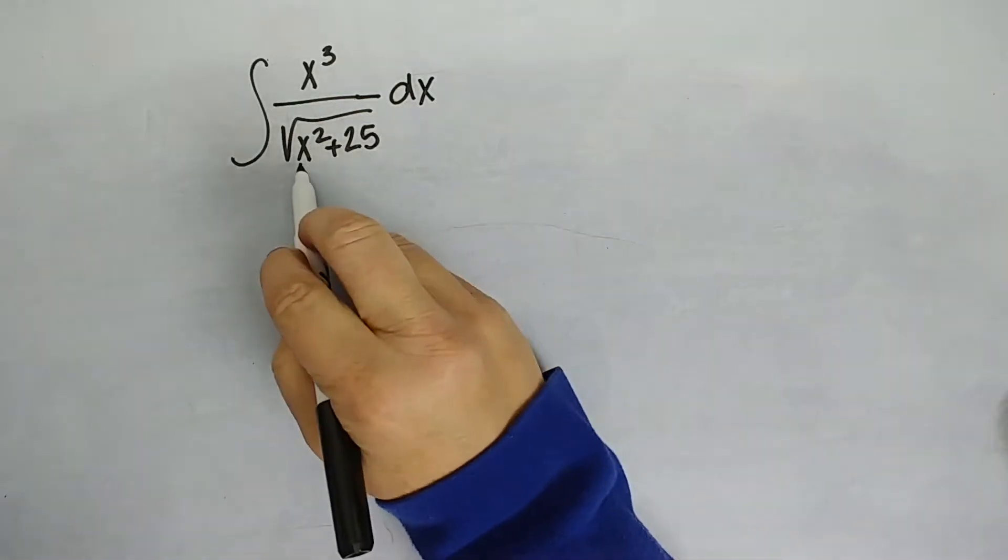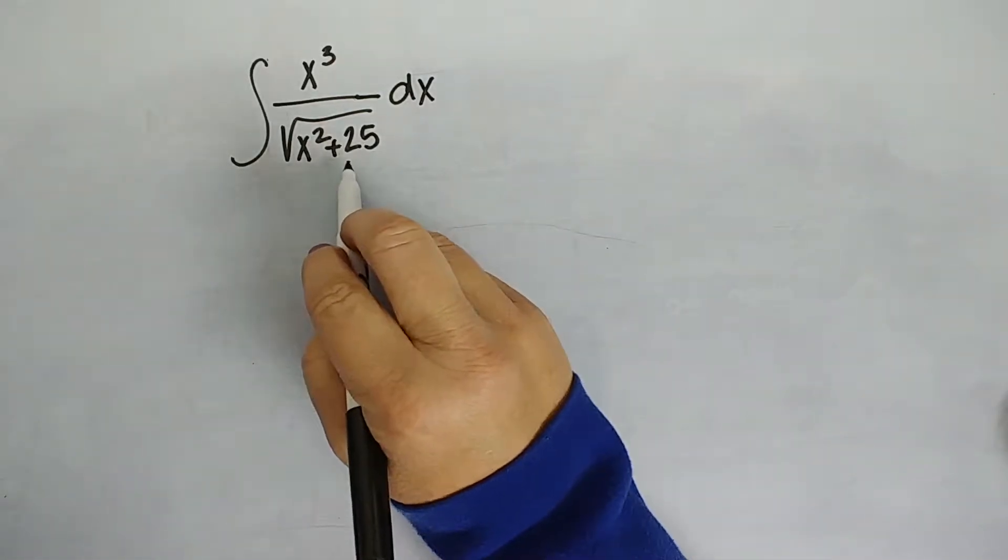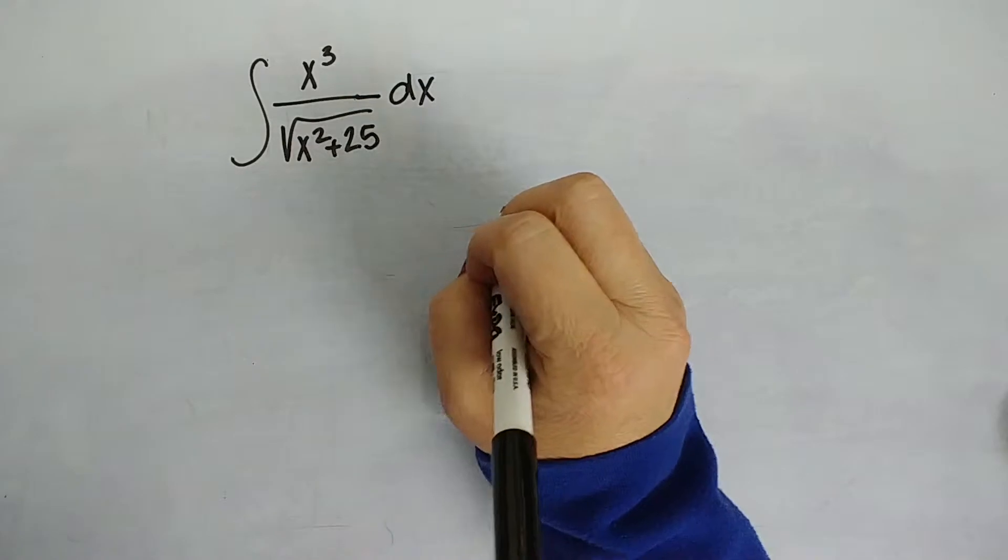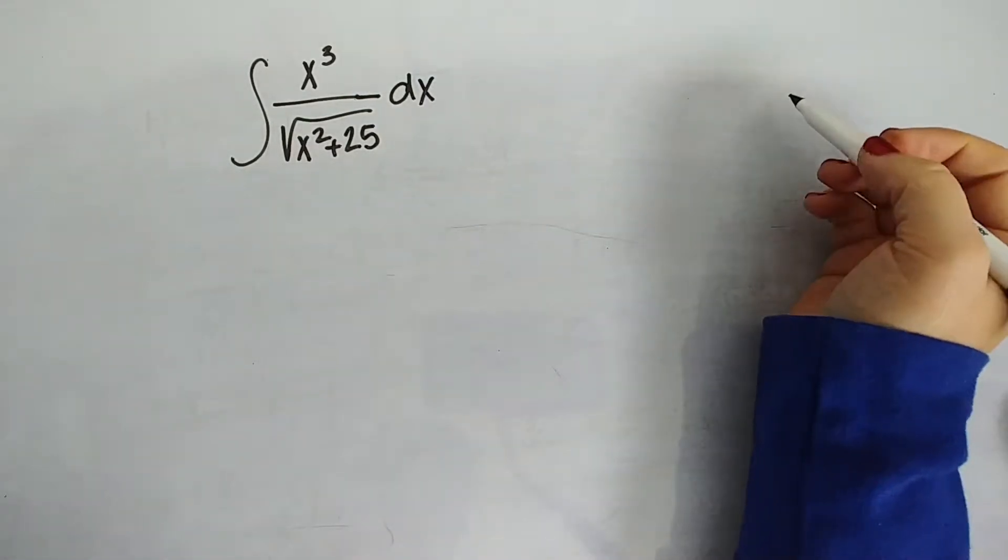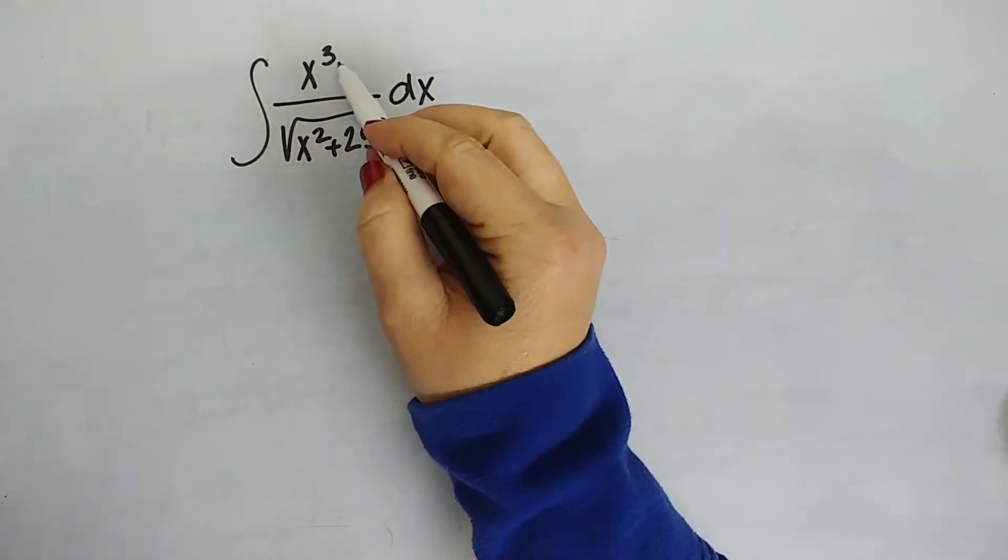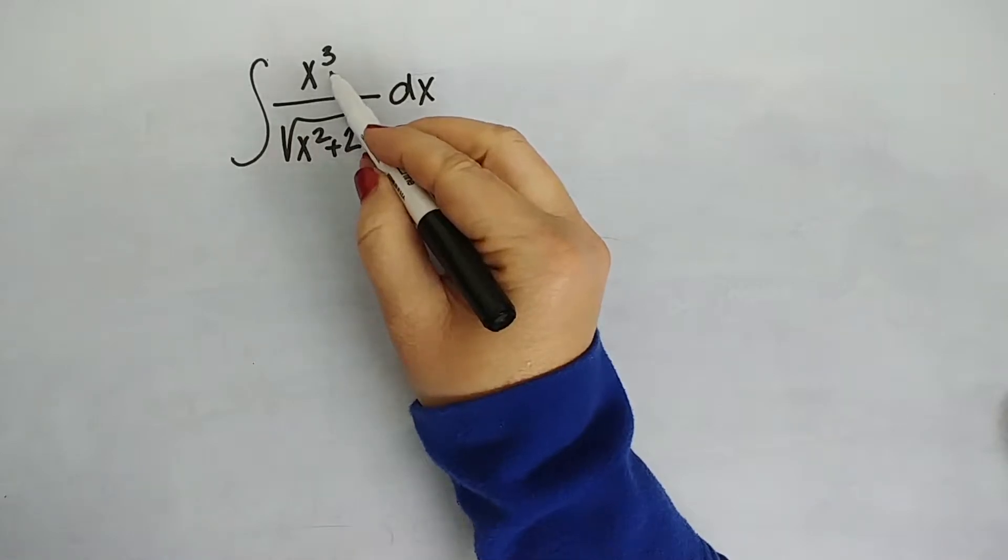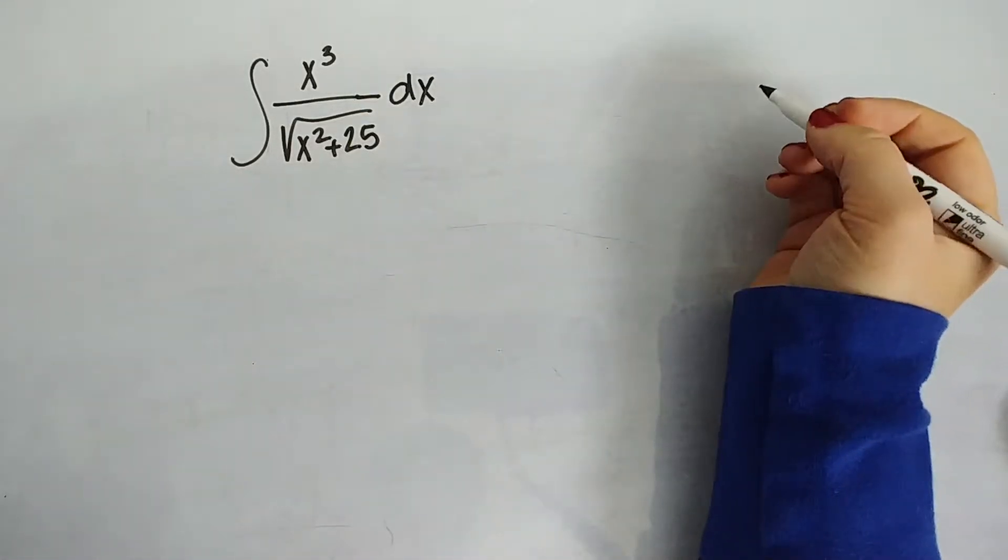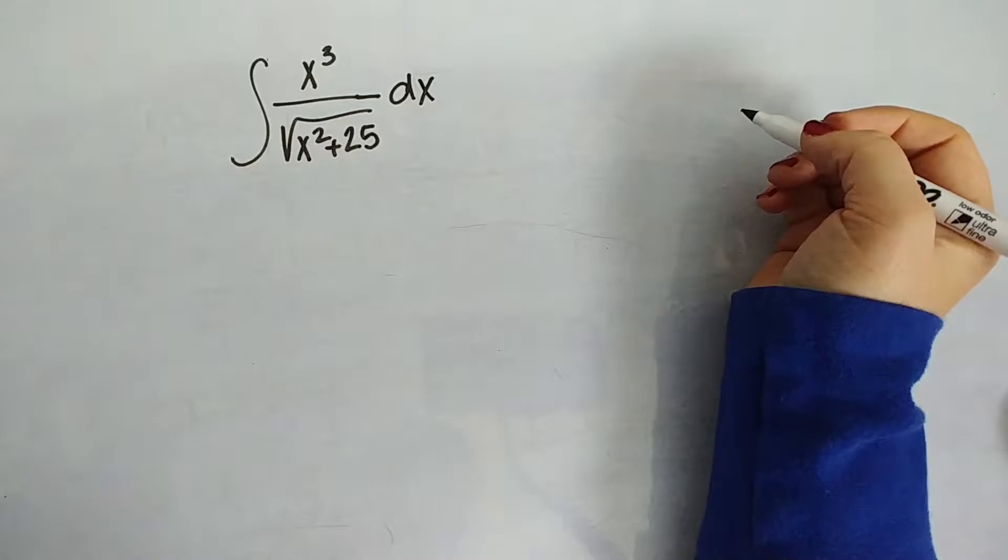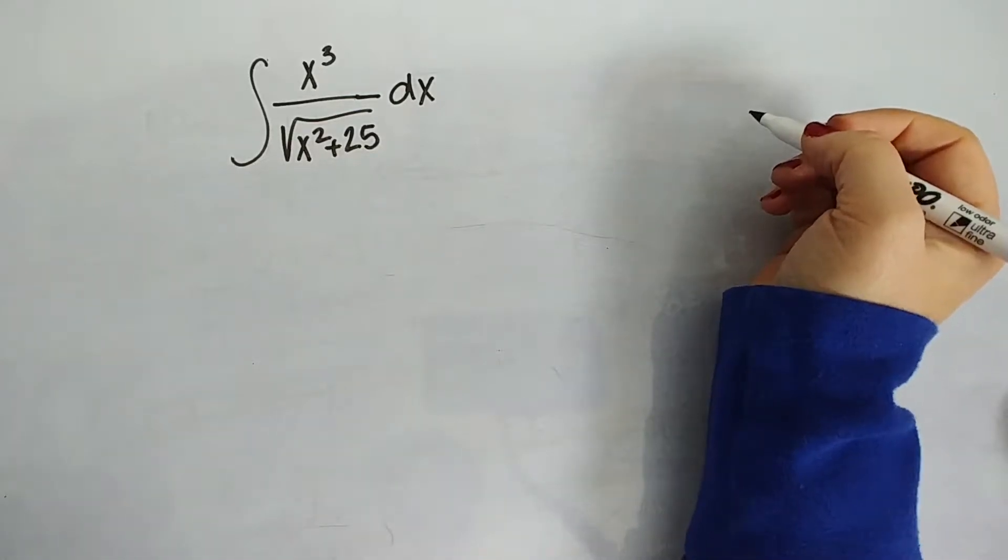So when you first look at it, you see this square root of x squared plus a squared and you think trig substitution, but then look around because we don't simply have a 1 or a dx up there, or even an x, we have an x cubed. I really think we're going to try trig substitution with this.